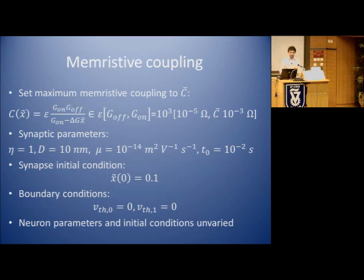With memristive coupling, we set the maximum value—of course the coupling can range between G_off and G_on—but we set the maximum value of the coupling to c-bar, where c-bar was the critical value for the diffusive coupling, so that we are sure we are going to get into the same scenario. These are the synaptic parameters, the synaptic initial condition, and the boundary conditions we set them to zero. We don't change the neuron parameters or initial conditions.